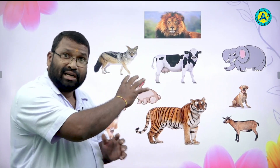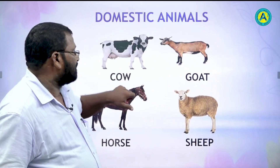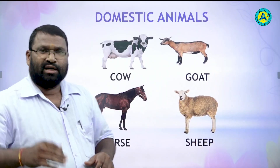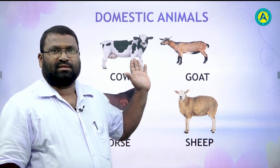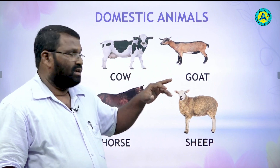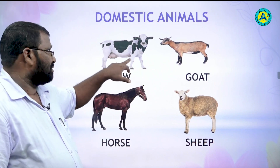So all these animals are categorized in two parts. One is a domestic animal, another is wild animal. Children, here see some domestic animals. Let us know their names.